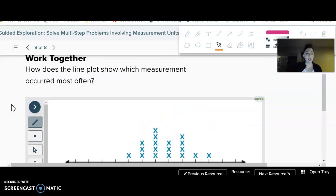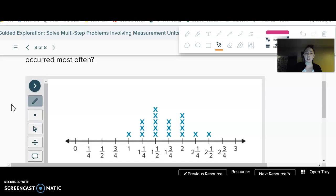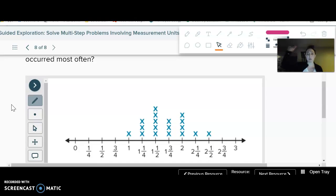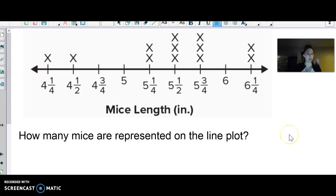So again, how does the line plot show which measurement occurred most often? Like I just said, that's the one with the most number of X's, right? Imagine this is like how many siblings they had. Well, which was the most common number of siblings? The one that's the tallest, which was the most common measurement, the one that's the tallest. All right. We're going to do some questions on here.